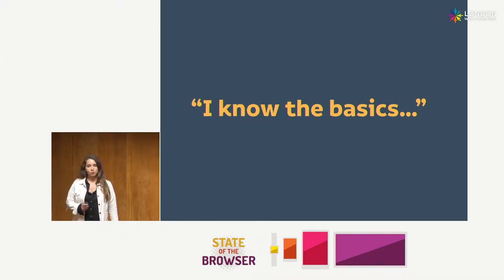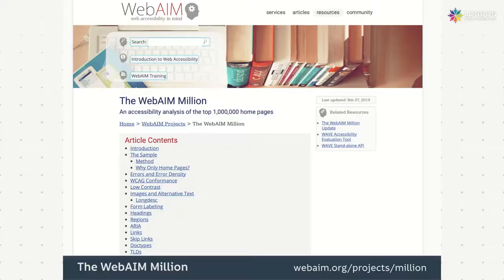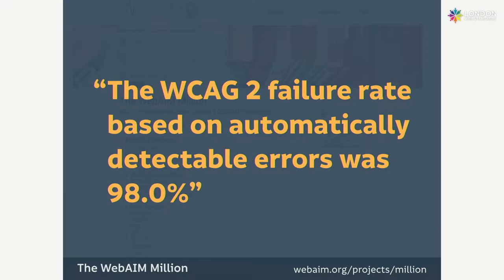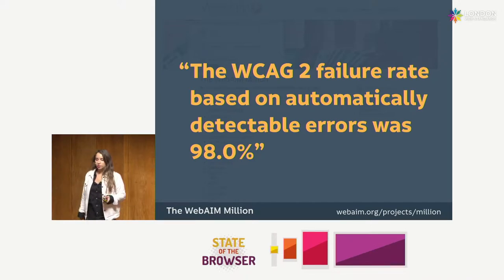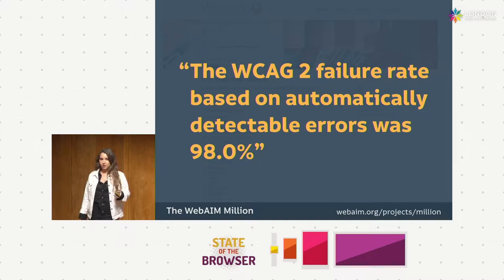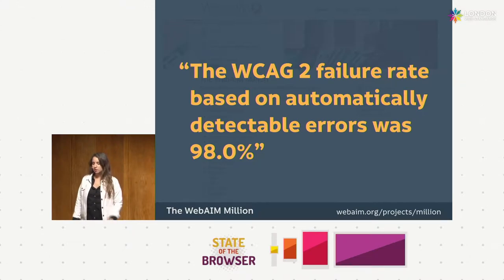As we know from Bruce's talk this morning, WebAIM did an automated accessibility analysis of the top 1 million home pages. All of these links will be on my slide deck later, so you don't need to worry about saving them. It showed that 97% of these home pages have basic WCAG errors that, in my opinion, have fairly straightforward fixes. I'll return to these errors a bit later.